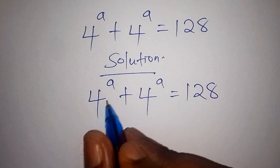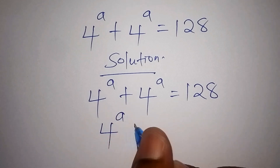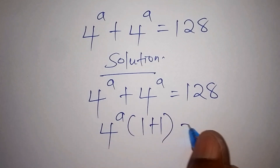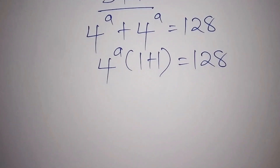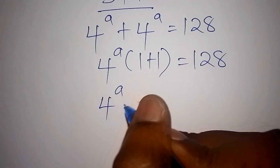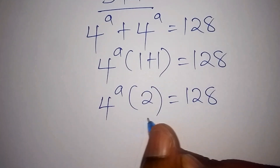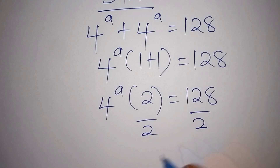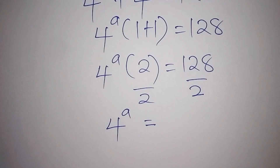The first thing we need to do is factorize 4 to the power of a plus 4 to the power of a. This can be written as 4 to the power of a, multiplied by bracket 1 plus 1, equals 128. Working out inside the bracket gives us 2, so we have 4 to the power of a times 2 equals 128. Dividing both sides by 2, we get 4 to the power of a equals 64.